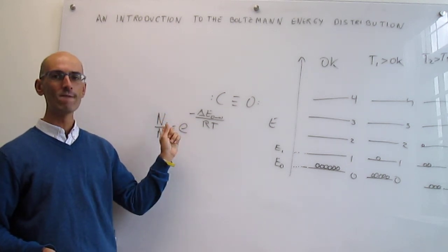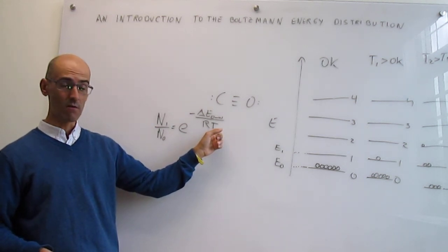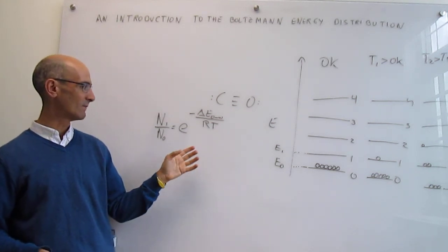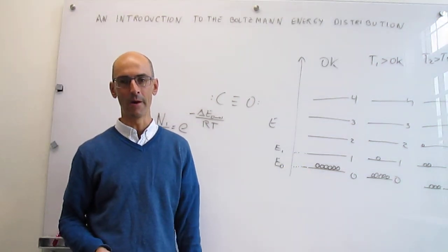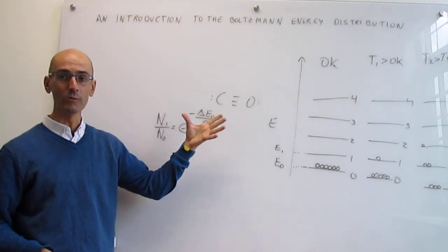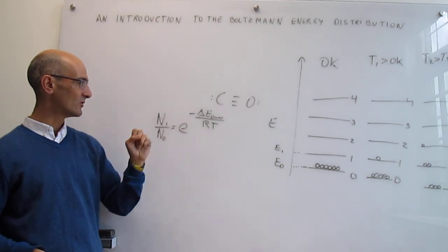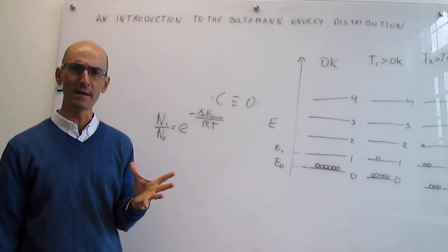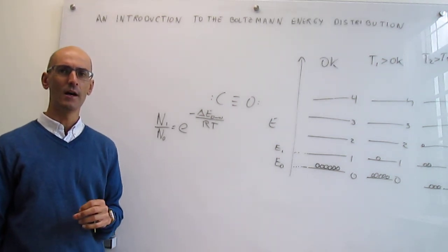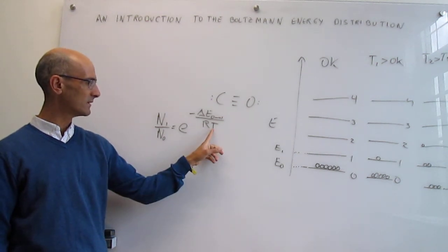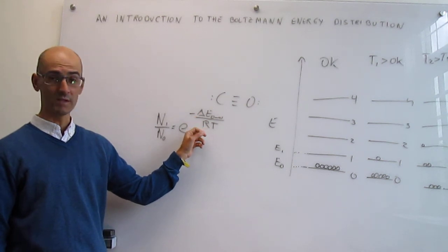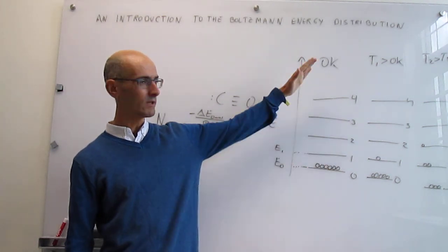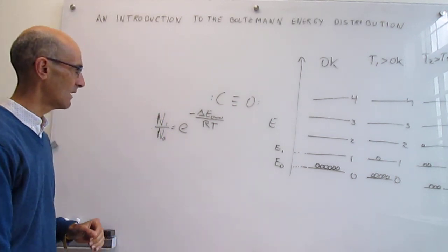Notice that if the temperature is zero, then you have e to the minus infinity, which gives you zero — meaning there are zero molecules in state 1 and all molecules are in state 0. But if you have a temperature different from zero, you will have numbers that are increasingly larger. And for infinite temperature, you have e to the zero, which is 1, meaning you have exactly the same number of molecules in the first excited state and in the ground state — all states will be equally populated at high temperatures.